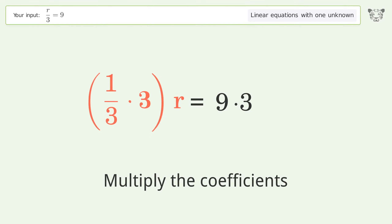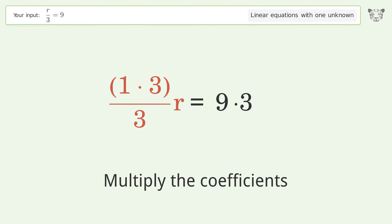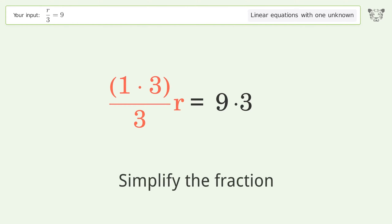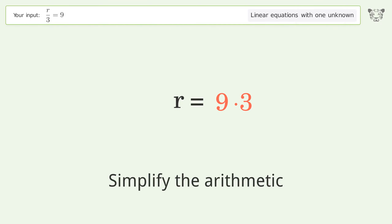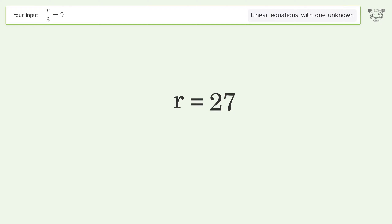Simplify the fraction, then simplify the arithmetic. The final result is r equals 27.